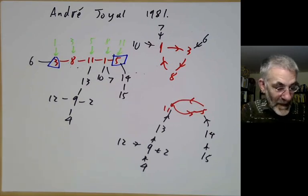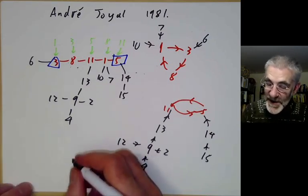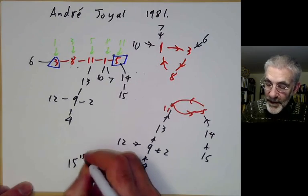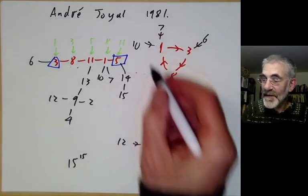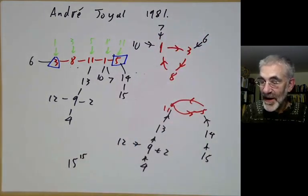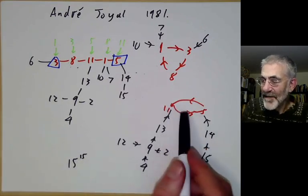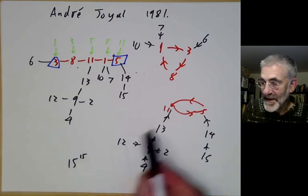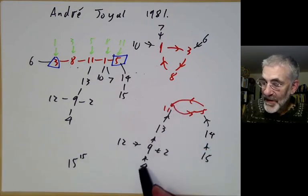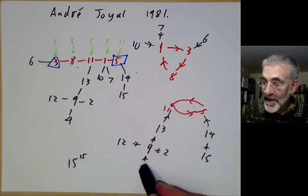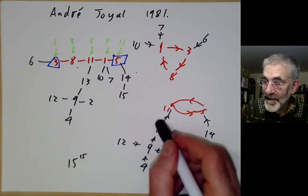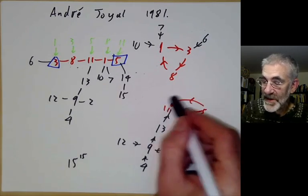So we now have an explicit bijection. Here I have 15 to the power of 15 functions from a set of 15 points to itself. You can see that any function from a finite set to itself, if you start with any point and keep applying the function, it will eventually end up in some cycle.